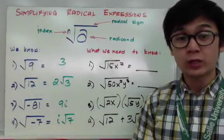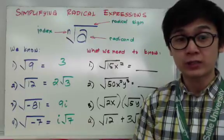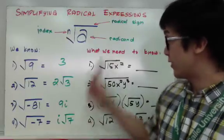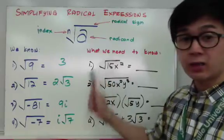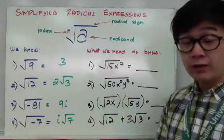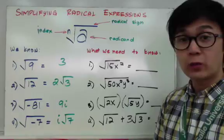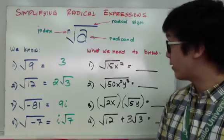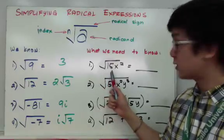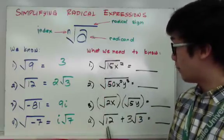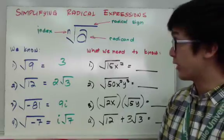For today, we are going to simplify radical expressions of a new form. The first four examples on the board are the radical expressions we'll work with today, starting from square root of 15x squared up through adding and subtracting two radicals together.